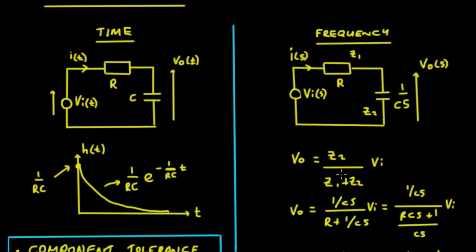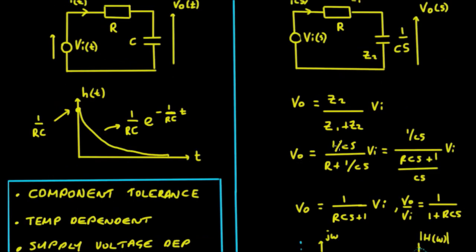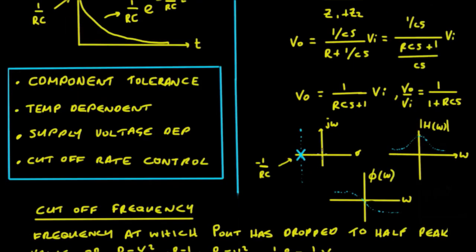Now the output here is going to be Z2 upon Z1 plus Z2, so we're just taking that fraction of the voltage from the full voltage V in. We can write this in terms of Z2 and Z1 as 1 upon CS and R plus 1 upon CS. The CS is going to cancel and we've got our transfer function for our low pass filter is equal to 1 upon 1 plus RCS.